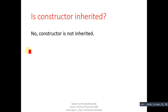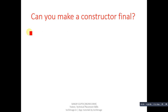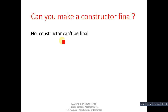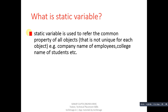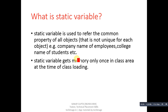Next question: can you make a constructor final? No, a constructor cannot be final. What is a static variable? A static variable is used to refer to the common property of all objects — it is not unique for each object. For example, company name of employees or college name of students. A static variable gets memory only once in the class area at the time of class loading.